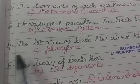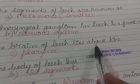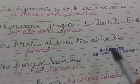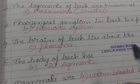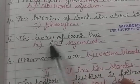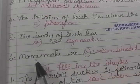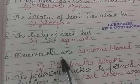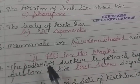The brain of leech lies above the pharynx. The body of leech has 33 segments. Mammals are warm-blooded animals.